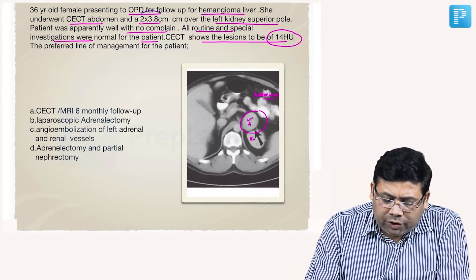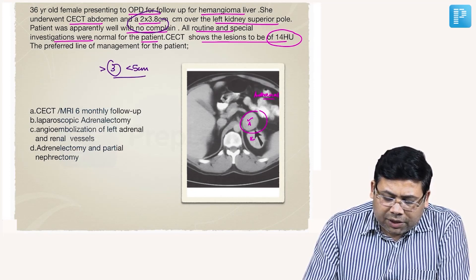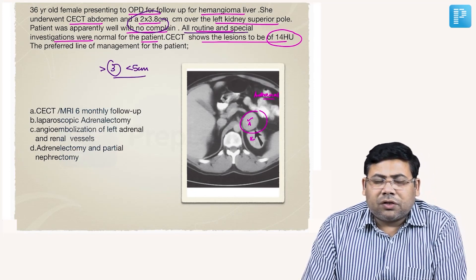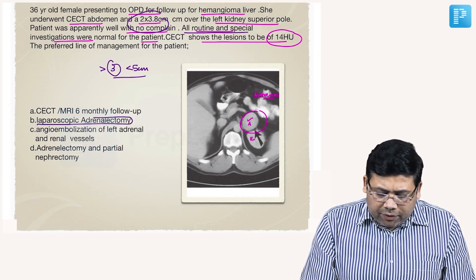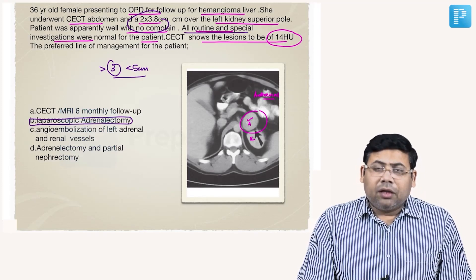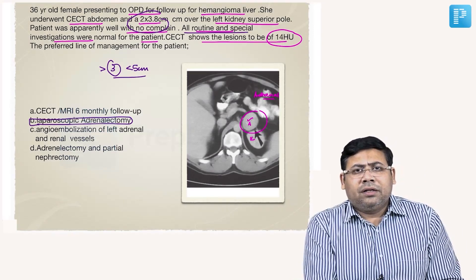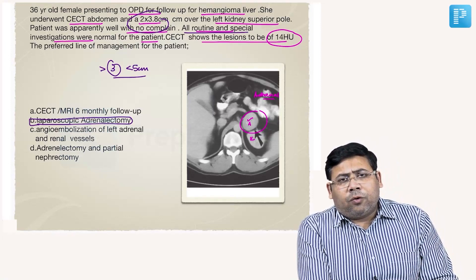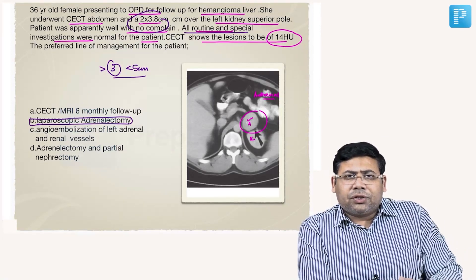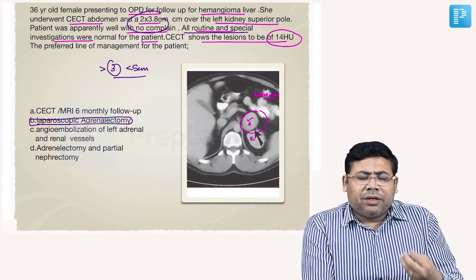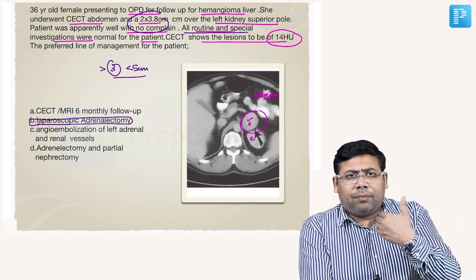For this patient, the mass is 2 x 3.8 cm — more than three but less than five centimeters — so it falls in the gray zone adrenal incidentaloma. The patient has no routine complaints and all investigations are normal with no comorbidities mentioned. I will be going for laparoscopic adrenalectomy. Up to six centimeters you can confidently do it laparoscopically; even up to nine or ten centimeters it has been done. The tumor is extracted through a Pfannenstiel incision, which is also cosmetically better than a big upper midline incision.